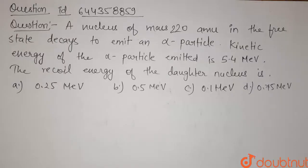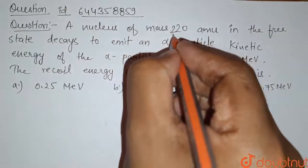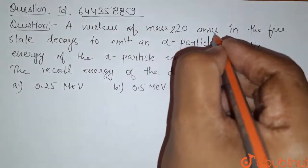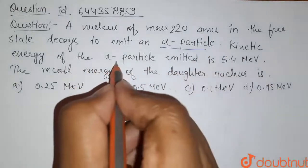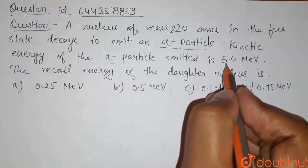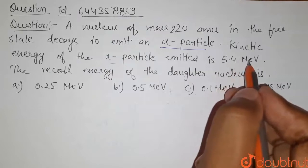Hello students, here is our question. A nucleus of mass 220 atomic mass units in the free state decays to emit an alpha particle. Kinetic energy of the alpha particle is 5.4 mega electron volts.